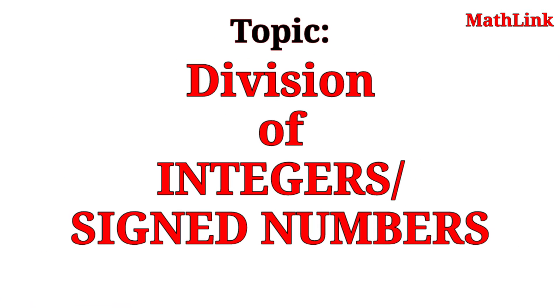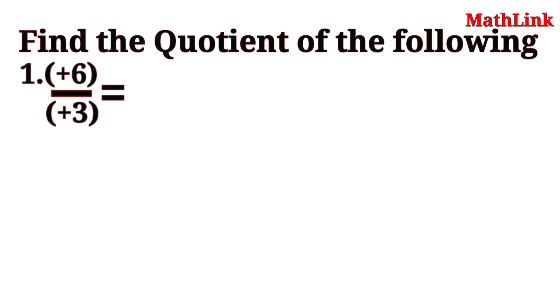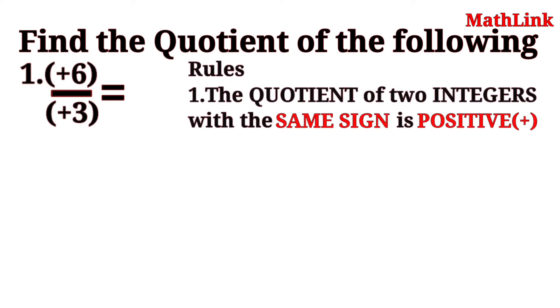Let's talk about division of integers or signed numbers. Find the quotient of the following numbers. Rule number 1: The quotient of two integers with the same sign is positive.